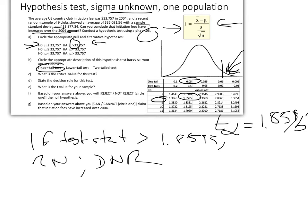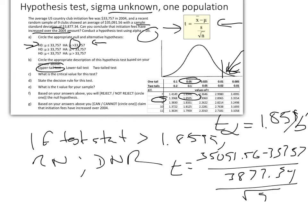The t value for our sample now is going to be t equals x-bar from our sample was 35091.56 minus 33757 over s was 3877.34, and then our sample was 9, n was 9. So when we calculate that, our t value then for our sample is 1.0326.